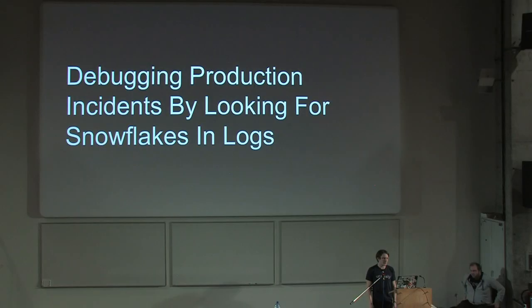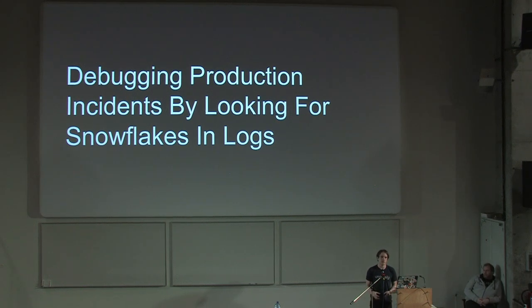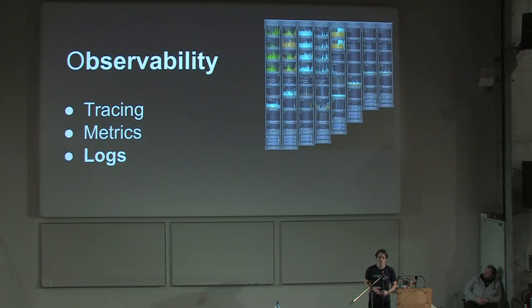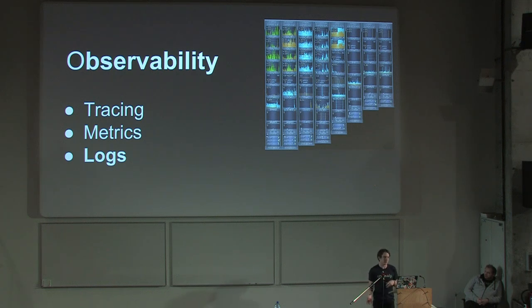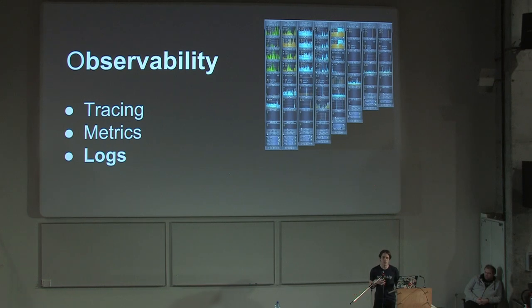Hello everybody, my name is Emil and I work for a company called Unomaly. We do algorithmic log analysis. I'm going to talk about a different way of using your logs that might be a bit more efficient and actually help you get to the problem more quickly. The starting point for this, which Charity Majors touched upon during this conference, is observability — the means by which we can actually understand what our software is up to. That can come in many forms: tracing, metrics, or logs, which will be the focus of this talk.